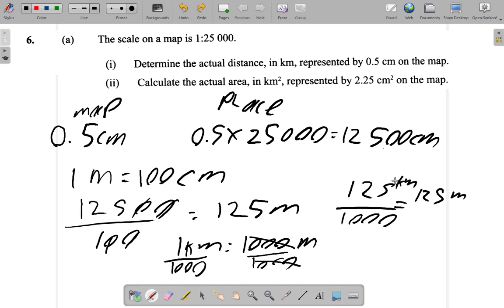Now, 125 over 1000 is equal to 0.125. So it's 0.125 kilometres. That's part one of question 6a.